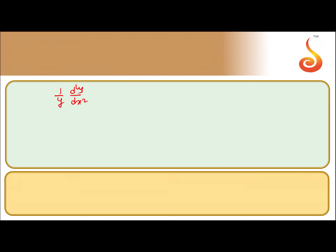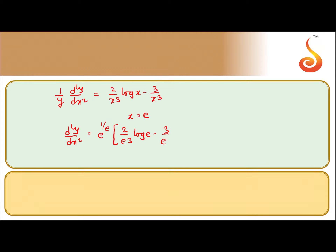So what we get is d²y by dx² is equal to e to the power 1 by e — that is the value of y — times 2 by e cube log e minus 3 by e cube. Finally, d²y by dx² is equal to e to the power 1 by e into minus 1 by e cube, or written as minus times e to the power 1 by e and e to the power minus 3. That is the final answer.